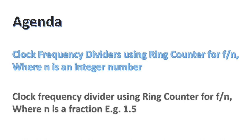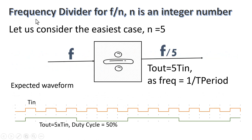I have divided this video into two parts. In the first part, we will learn about the design of clock frequency dividers using a ring counter to generate a signal of frequency F by N, where N can be any integer number, odd or even. In the second part, we will learn about the design using a ring counter where N can be any fractional number, for example 1.5, 2.5, 3.5, etc. Let us start with the integer case.